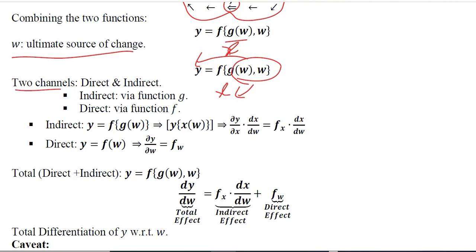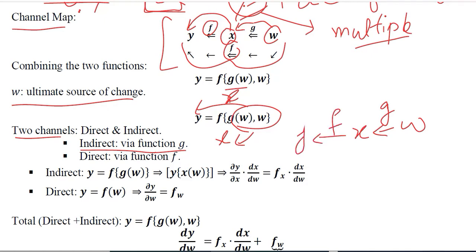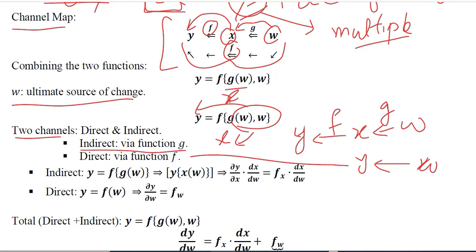Now, there are two channels through which the effect is taking place. Even from this chart, you can see that there is a direct effect of w and an indirect effect of w. W is indirectly affecting y via function g — that is, it is affecting x through function g, which is further affecting y through function f. Whereas the direct effect of w on y is through f directly. So both direct and indirect effects are present on y from w.